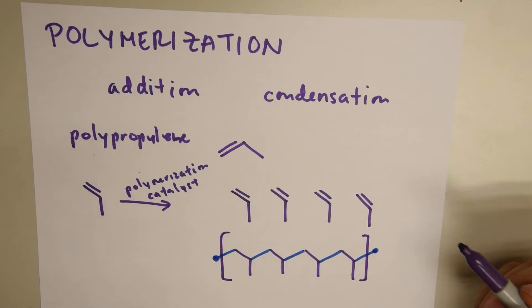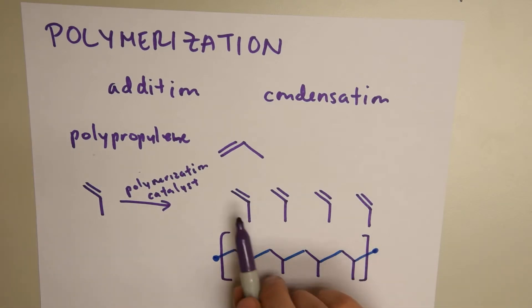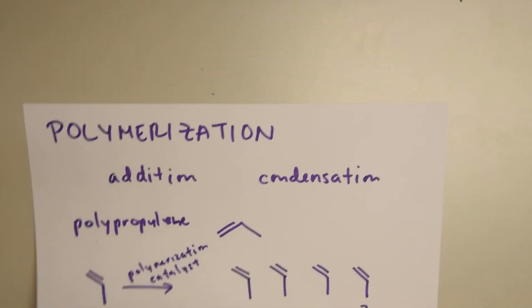In essence, polypropylene is a plastic. So, we took little pellets of the monomer, we polymerized it, and then we got a polymer reaction. Let me give you another example.